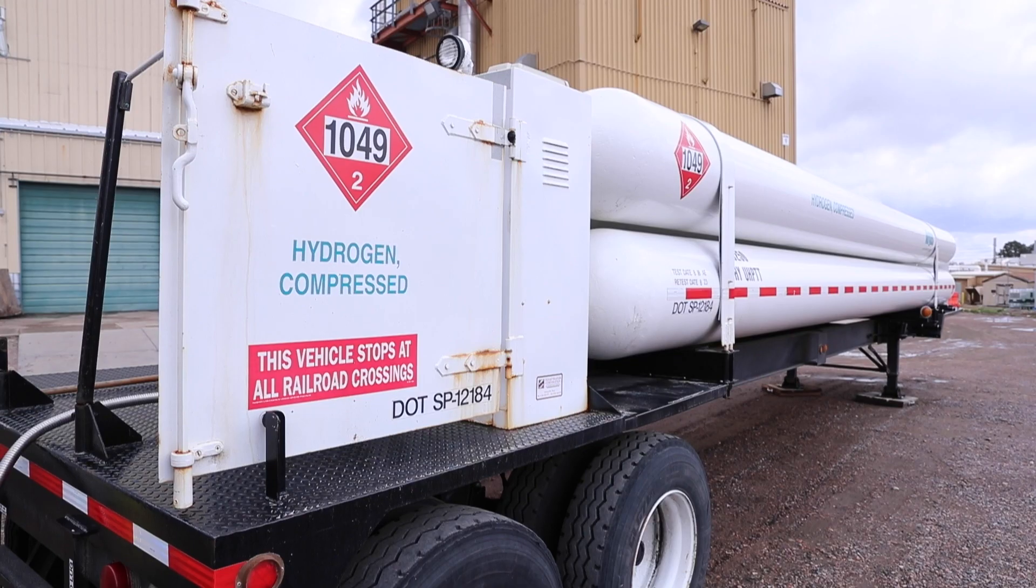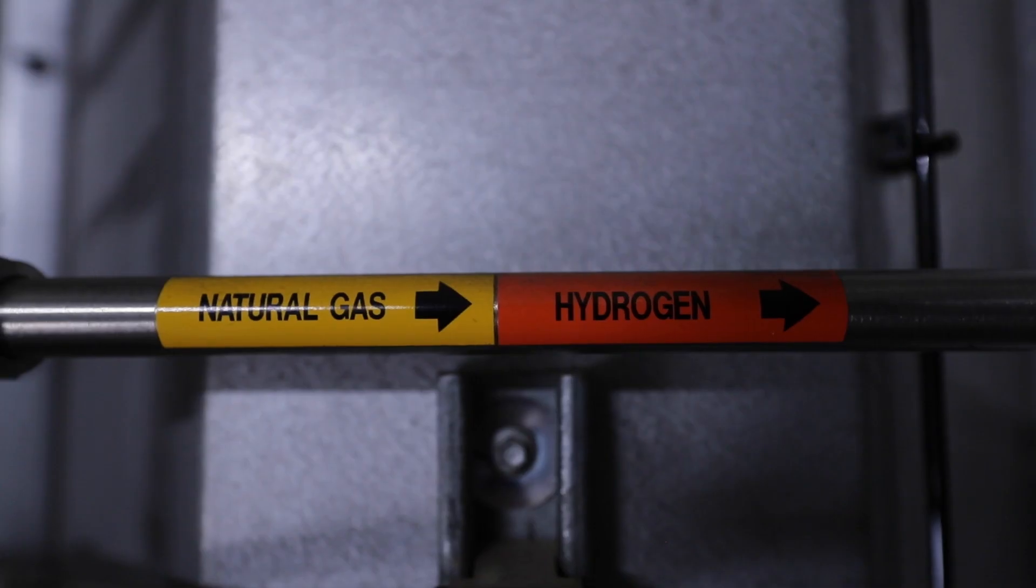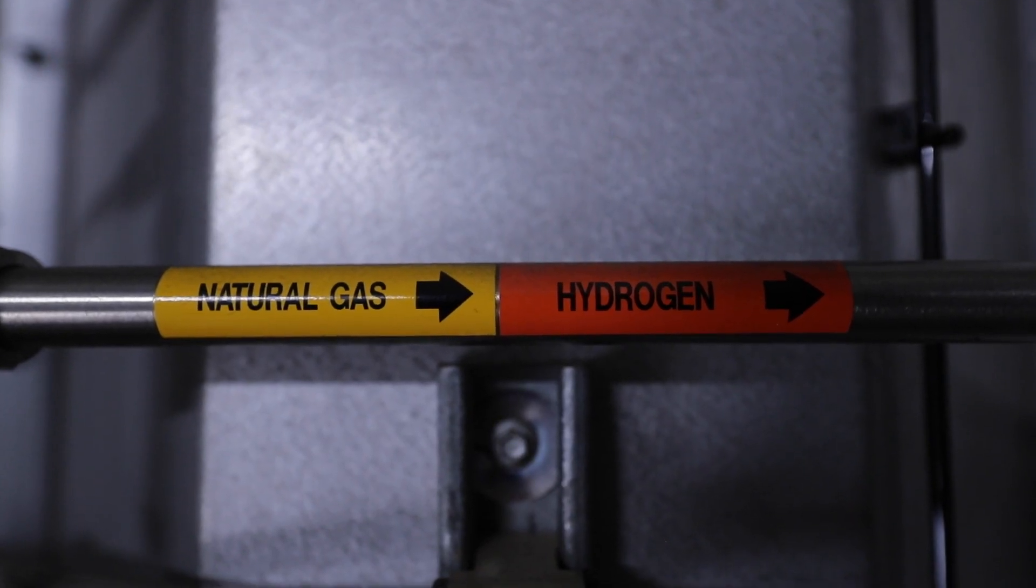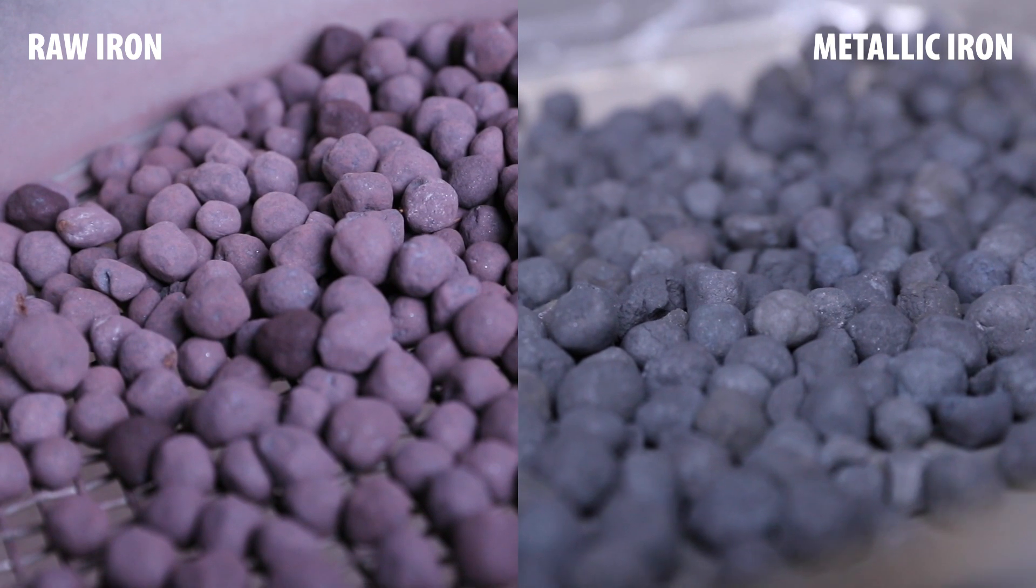So we are exploring a pathway to use an alternative reductant that is hydrogen instead of a fossil fuel like coal or natural gas, to basically derive the metallic iron from the iron ore, which is the rock you're basically pulling out of the ground.